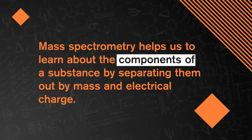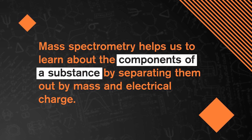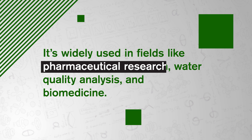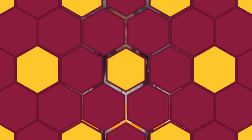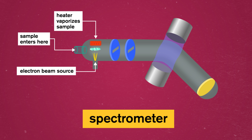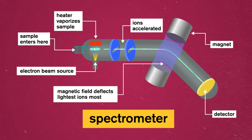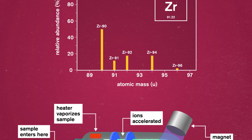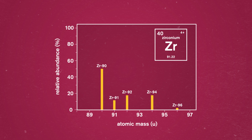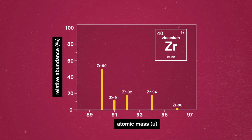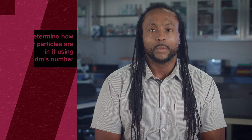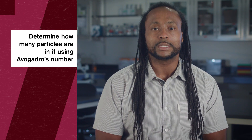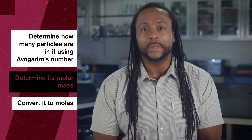Mass spectrometry helps us learn about the components of a substance by separating them out by mass and electrical charge. It's widely used in fields like pharmaceutical research, water quality analysis, and biomedicine, and it relies on a machine called a mass spectrometer. A mass spectrometer ionizes a sample so it accelerates into a beam projected onto a detector. Components with smaller masses or more ionic charge hit the detector first, followed by heavier or less-charged components. The spectrometer provides a plotted chart showing which components are present, in what quantities, and their masses — and as we've learned, we can do a lot of valuable calculations if we know the mass of a substance.